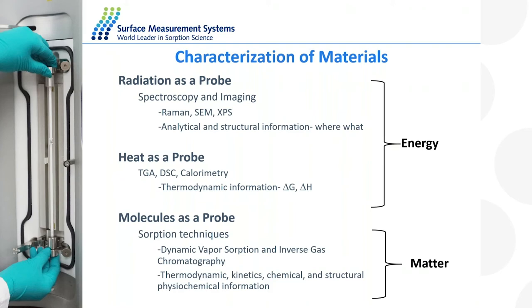The techniques I'm particularly interested in are those where we do not use radiation or heat to probe the material, but instead use a molecule. We take chemical molecules, expose the sample to them, and by doing so we learn some information. In many cases this information is not easy to obtain using heat or radiation. The two techniques I'll focus on today are inverse gas chromatography and dynamic vapour absorption — essentially, we use a molecule to get information about the material.